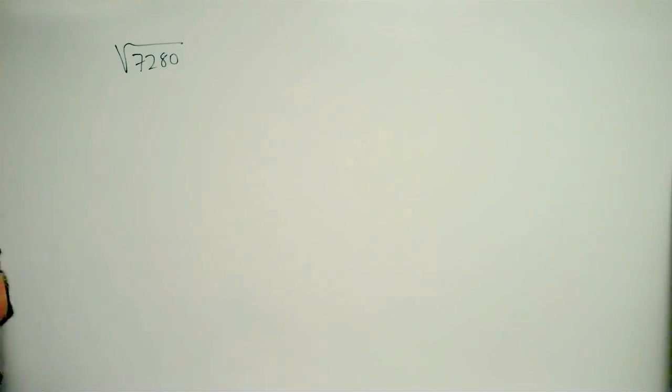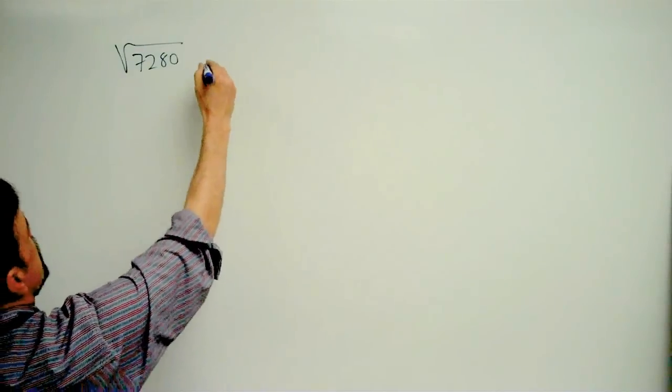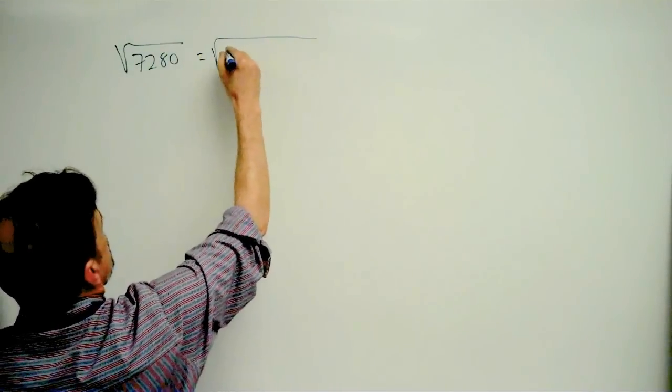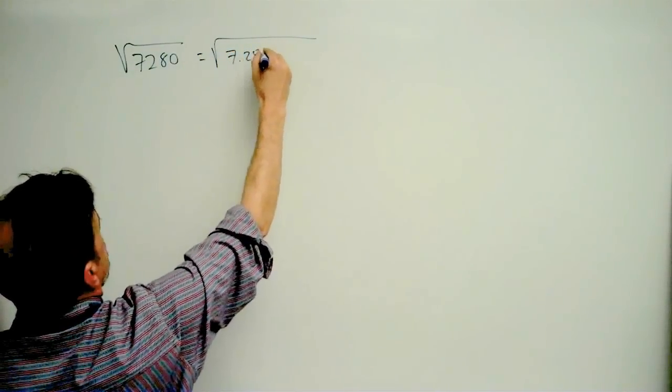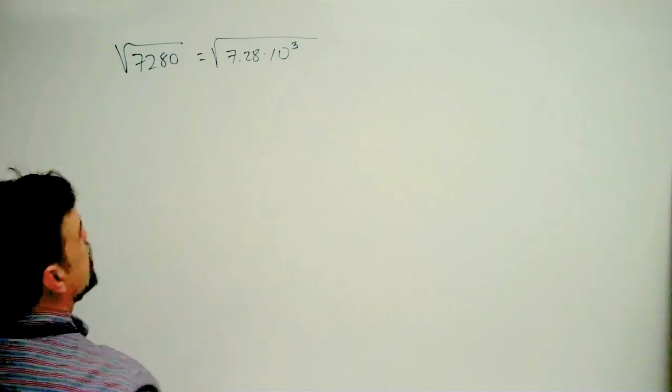Okay, so how to start. With the square root of 7,280, first let's express this in scientific notation. This is going to be the square root of 7.28 times 10 to the third power.